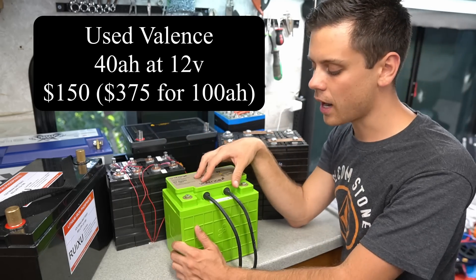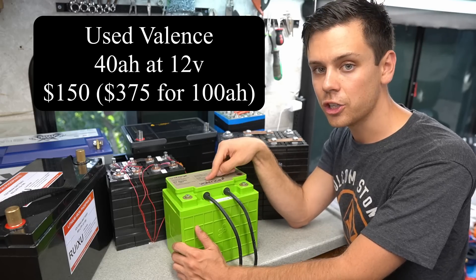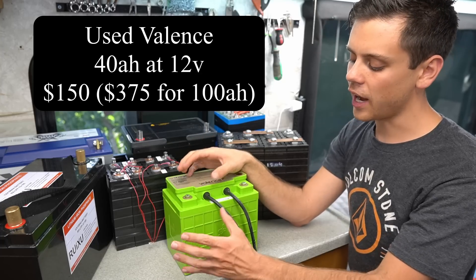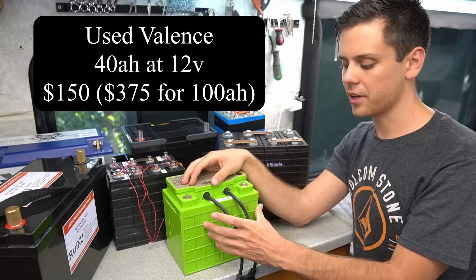Here is the valance battery for medical equipment. This is used. I bought these off eBay if you didn't watch that video. They're super cheap. So for 80 amp hours it cost me $300.